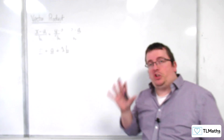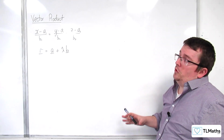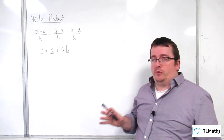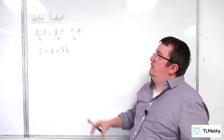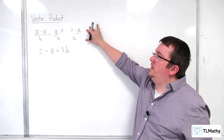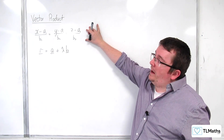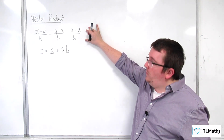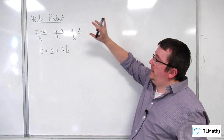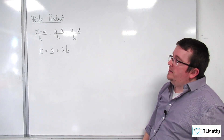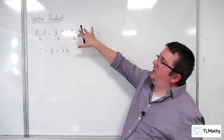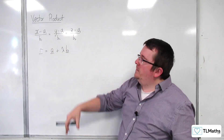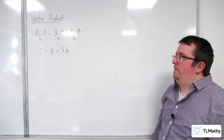So far, we've met two different forms for the equation of a line in 3D. We've met the Cartesian form: x take away a1 over b1 equals y take away a2 over b2 equals z take away a3 over b3. And of course, there were subtly different forms if b1, b2, or b3 was 0.